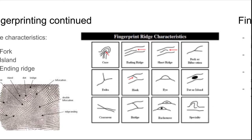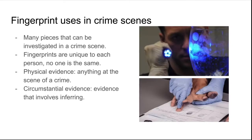There are many pieces of evidence that can be investigated at a crime scene, like footprints, animal prints, blood samples, hair samples, tire tracks, etc. Fingerprints are important because nobody will have the same fingerprints as anyone else, but may have identical examples from the list above, losing its accuracy. The list above is also what's known as physical evidence, which is anything at the scene of the crime.